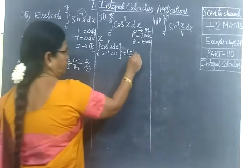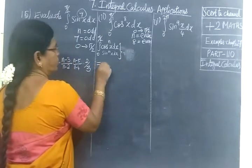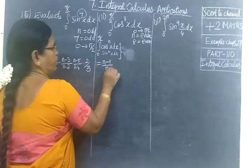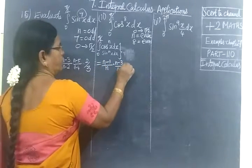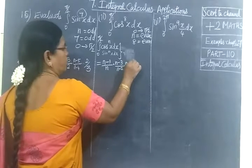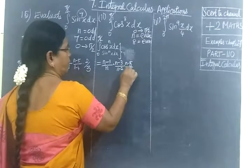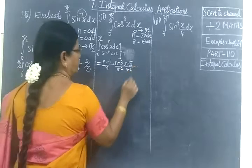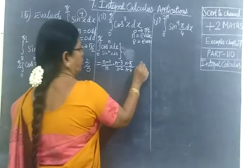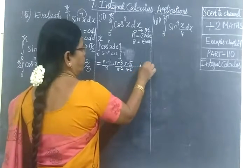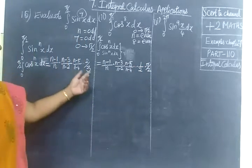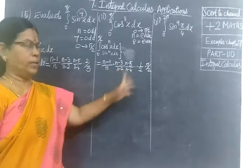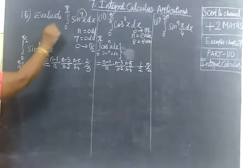n-1/n, same thing - here is the only difference: n-1/n times n-3/n-2 times n-5/n-4, then in the last way, etc., 1/2 times π/2. The last term is variable, the original one is the result. So now we apply for n equal to 7.